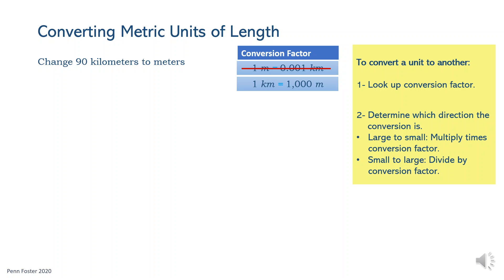Let's get back to the first problem. The conversion factor is 1,000, and the direction of unit conversion is from large to smaller. We were able to decide the direction of the conversion by analyzing the conversion relation: if each 1,000 meters grouped together makes one kilometer, then a kilometer must be larger than a meter. Therefore, the conversion direction is from large to smaller. For the calculation, multiply 90 times 1,000. The answer is 90,000 meters — 90 kilometers are equivalent to 90,000 meters.